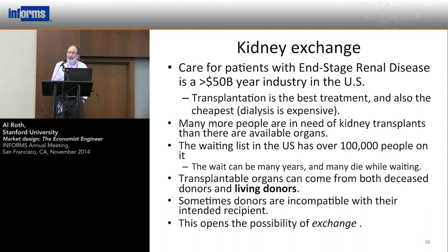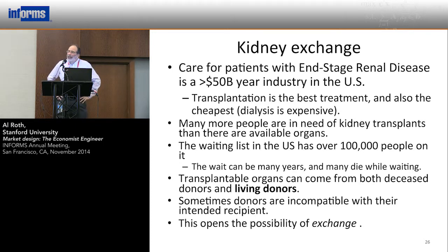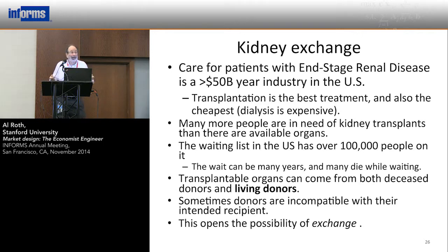I want to switch mathematical techniques and tell you about a different kind of matching problem. All of these problems are matching markets. Often when we think about markets, we think about auctions, commodity markets, and stock markets, where the job of the market is price discovery — to find a price at which supply equals demand. But many, many markets don't work that way. I teach at Stanford University, and tuition is expensive, but Stanford doesn't choose its freshman class by raising tuition until just enough people remain to fill the seats — they don't adjust price until supply equals demand.